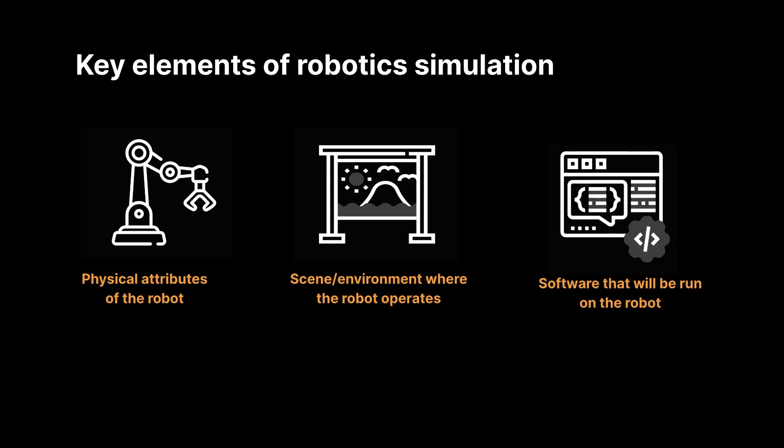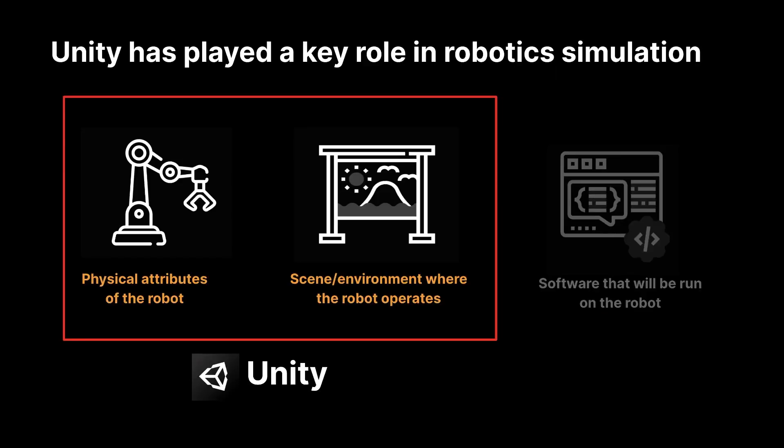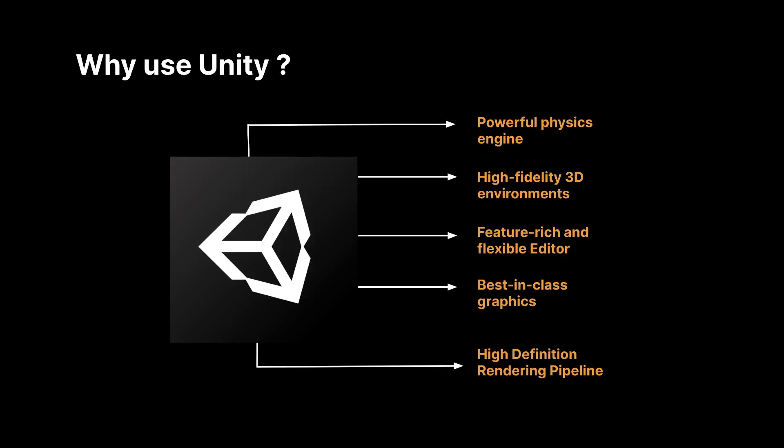Thinking about the simulation workflow, it really boils down to three main components. We need a robot operating in an environment with some sort of controlling code that's going to be run on the robot itself. So how does Unity fit into this? Well, Unity does these first two items really well. The only thing that Unity was lacking thus far is the software that will be run on the robot itself.